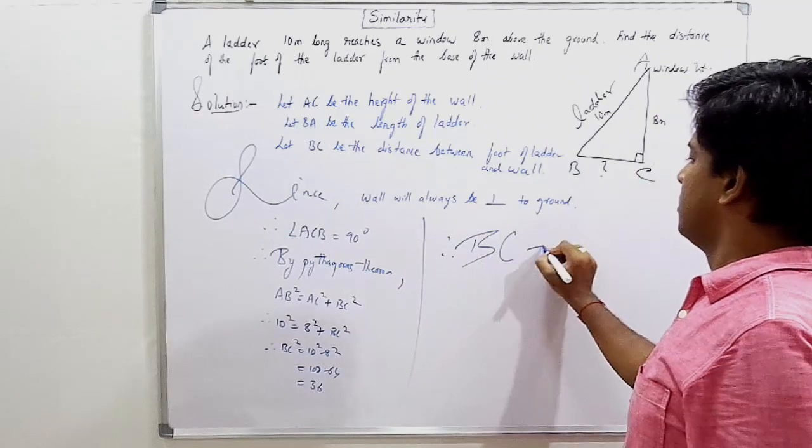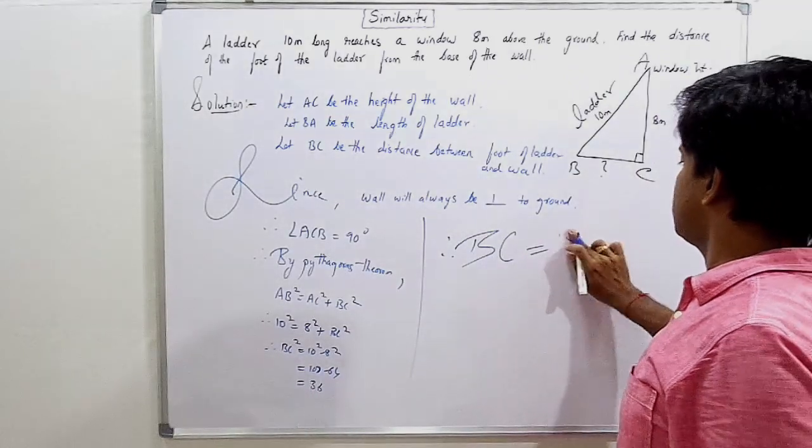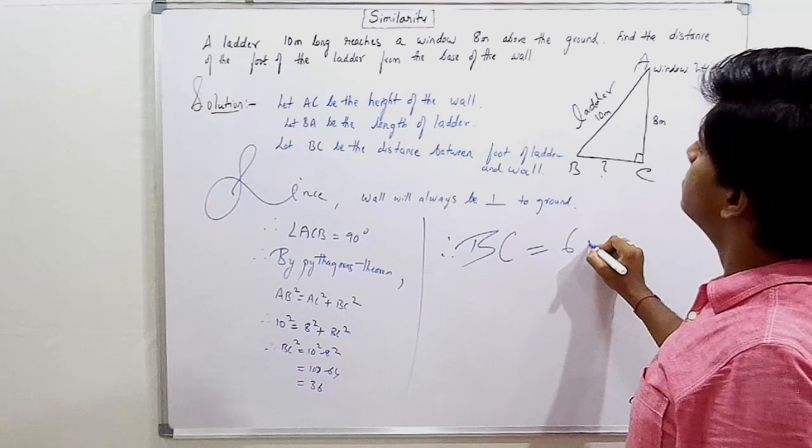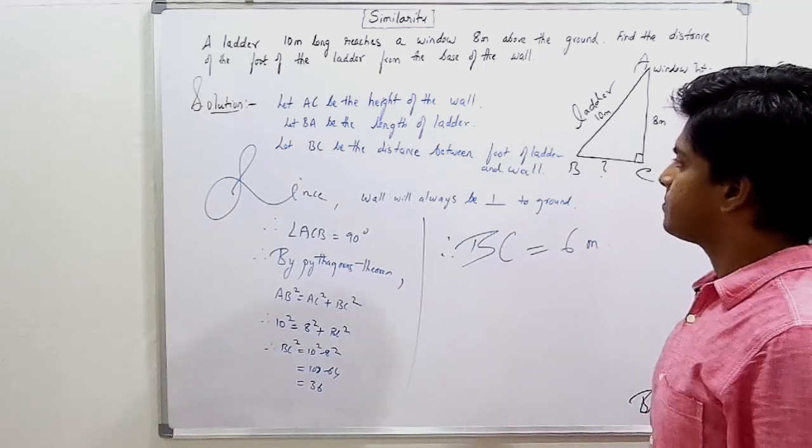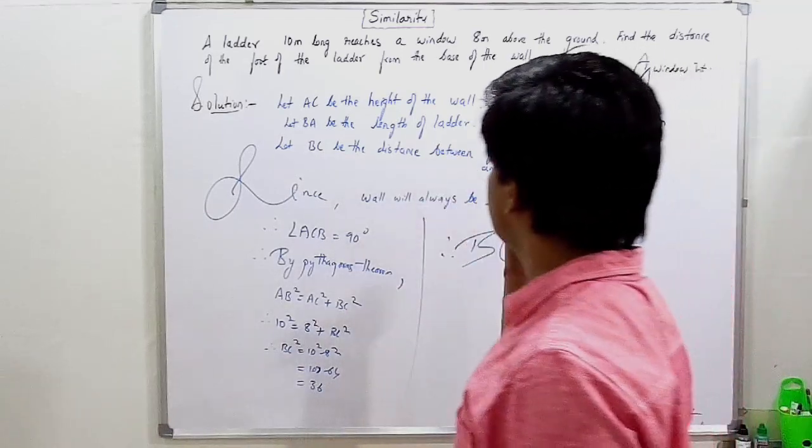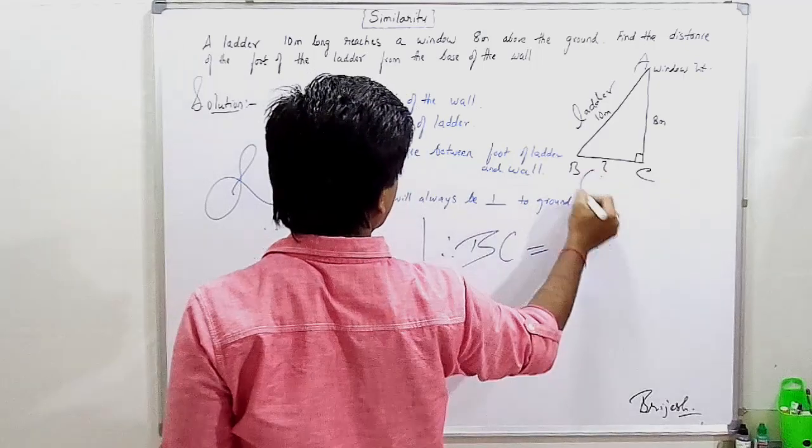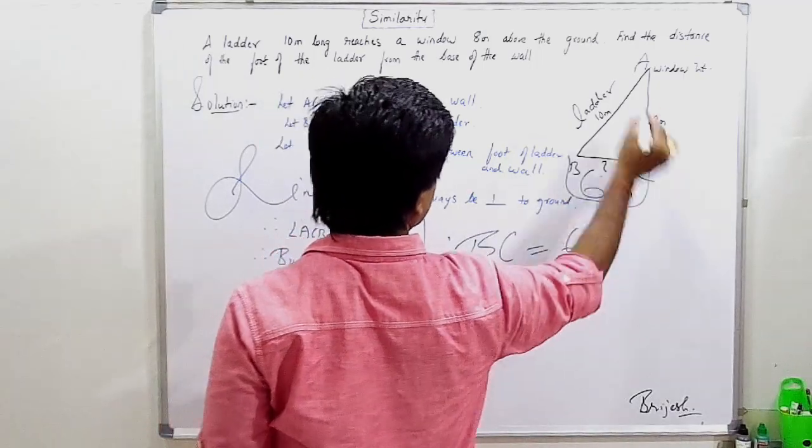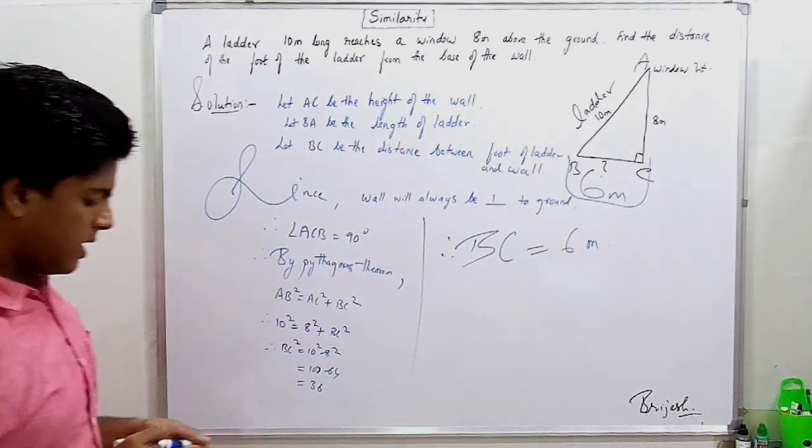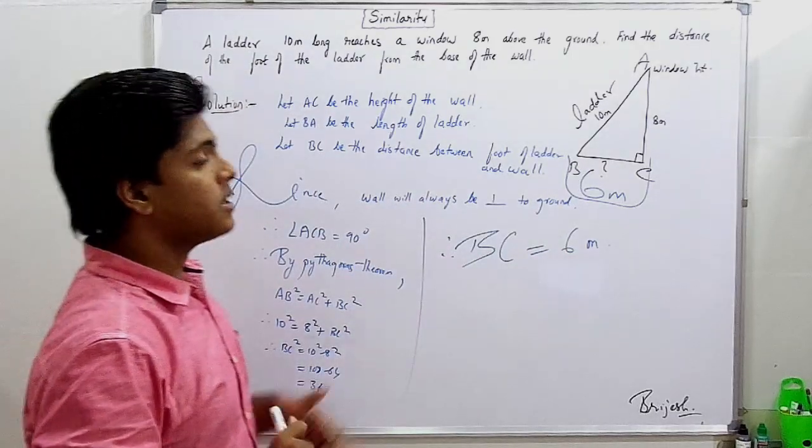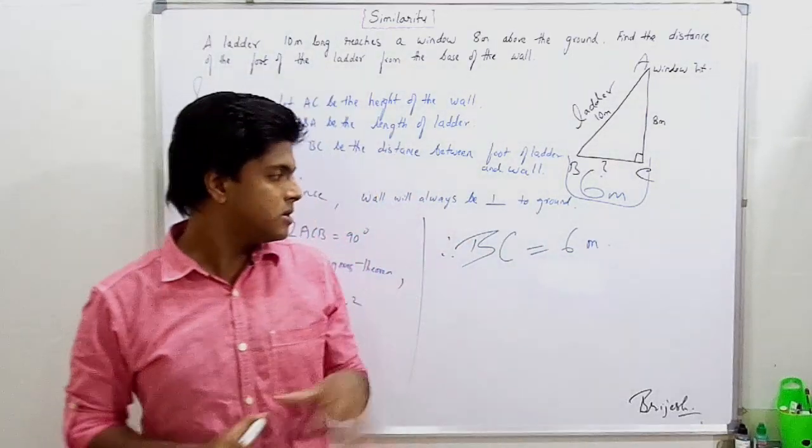Therefore, BC is equal to 6 meters. Therefore, distance between the foot of the ladder and the wall is 6 meters.